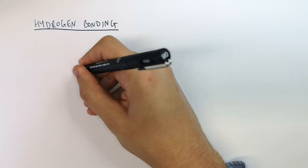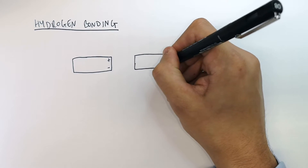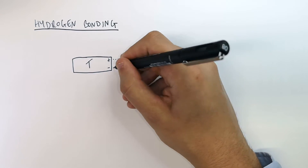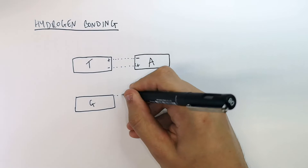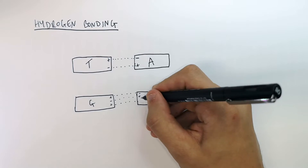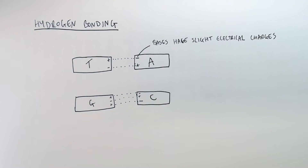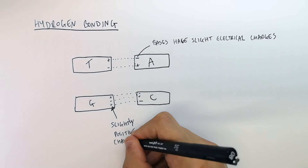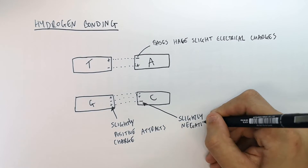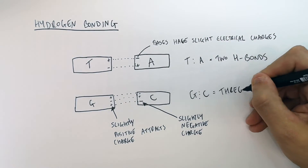Hydrogen bonds bond the bases together. The slightly positive part of one base is attracted to the slightly negative part of another base. T and A bind together by hydrogen bonds, and G and C have three hydrogen bonds. So T and A have two hydrogen bonds and G and C have three hydrogen bonds.